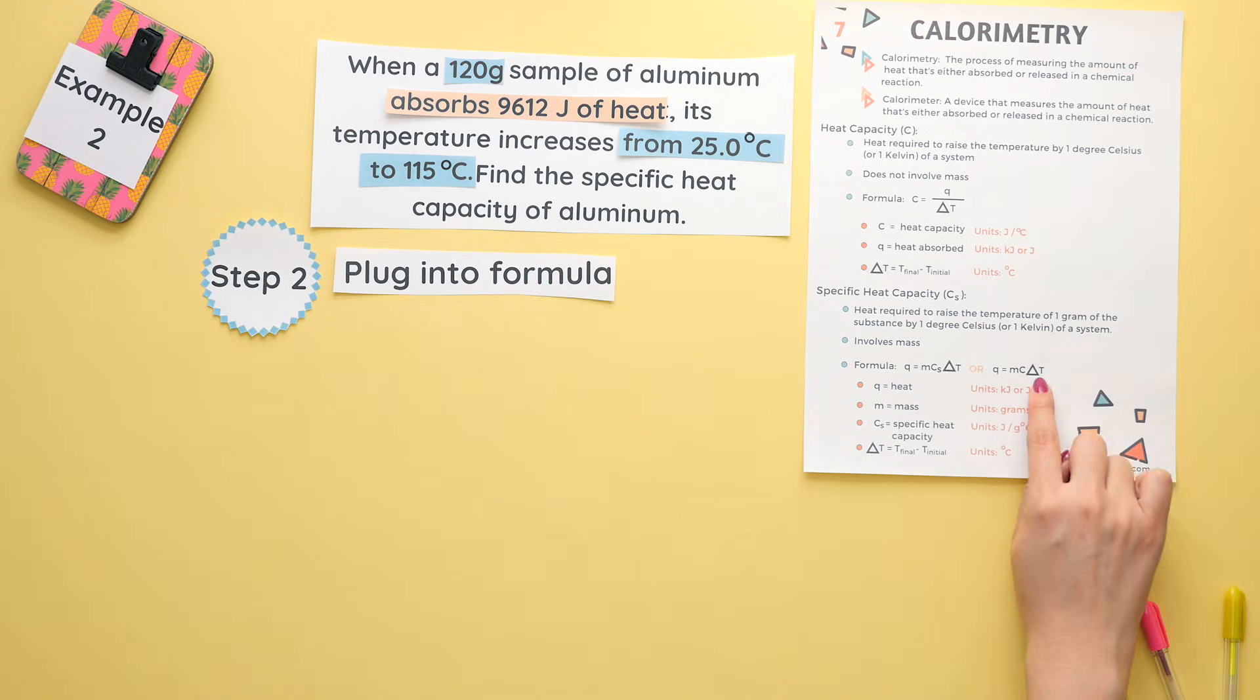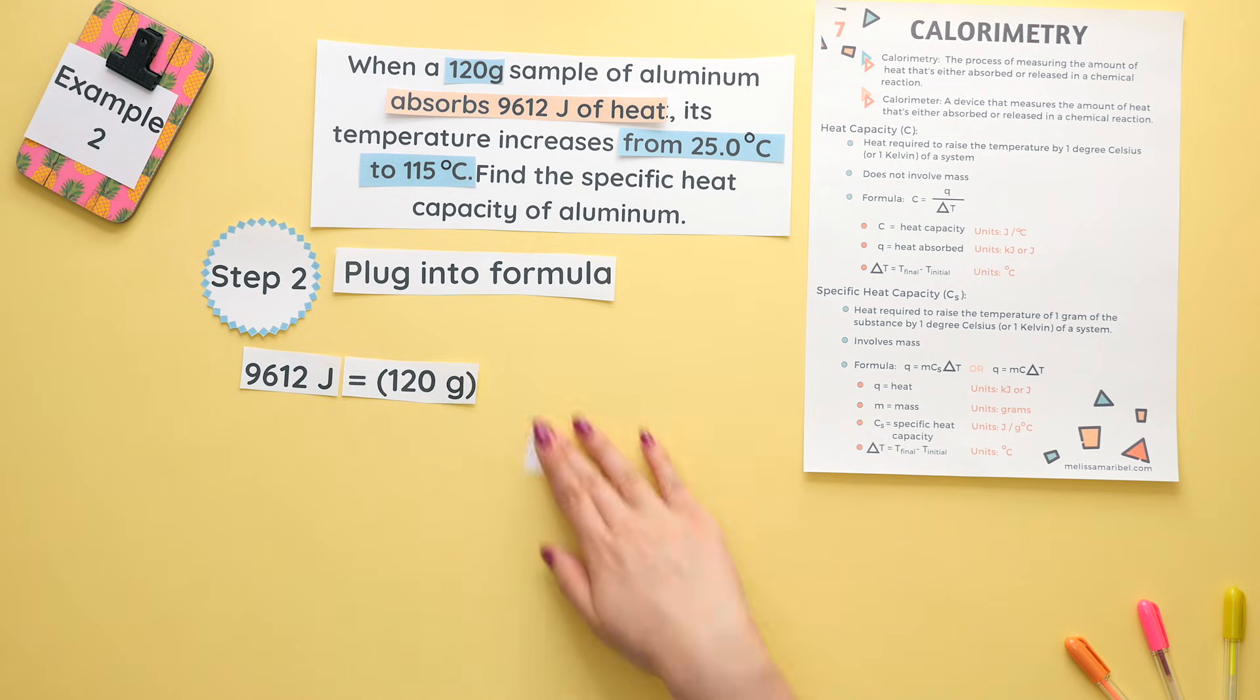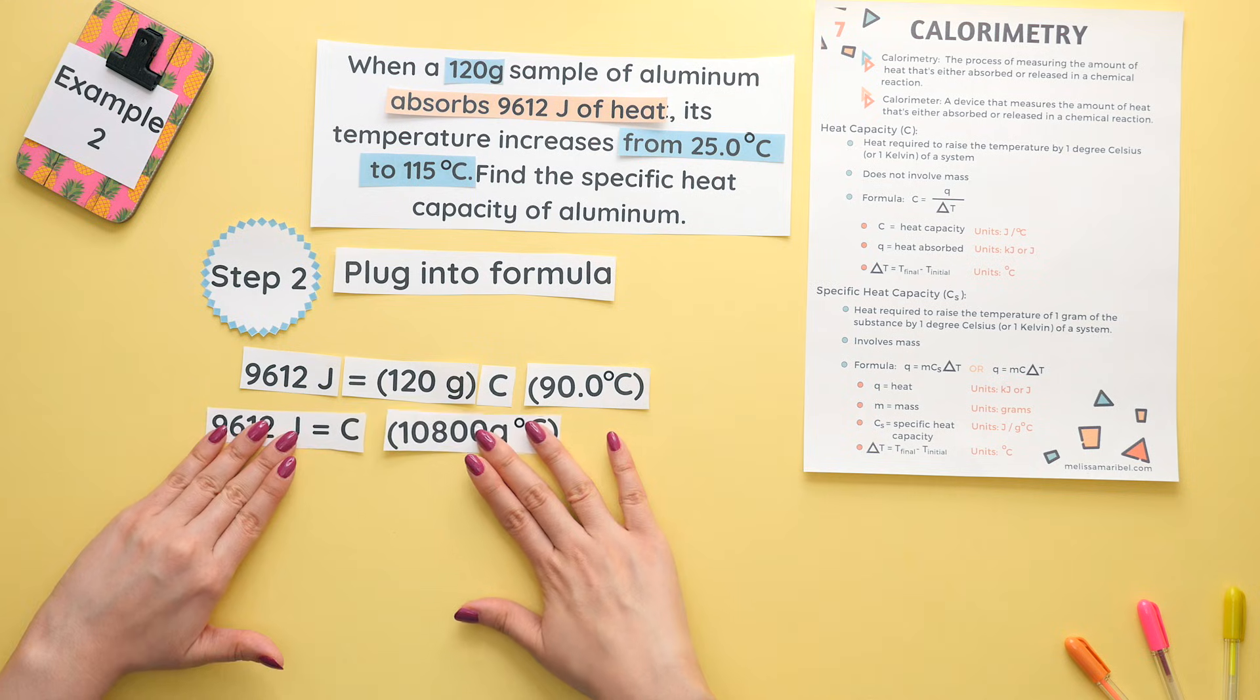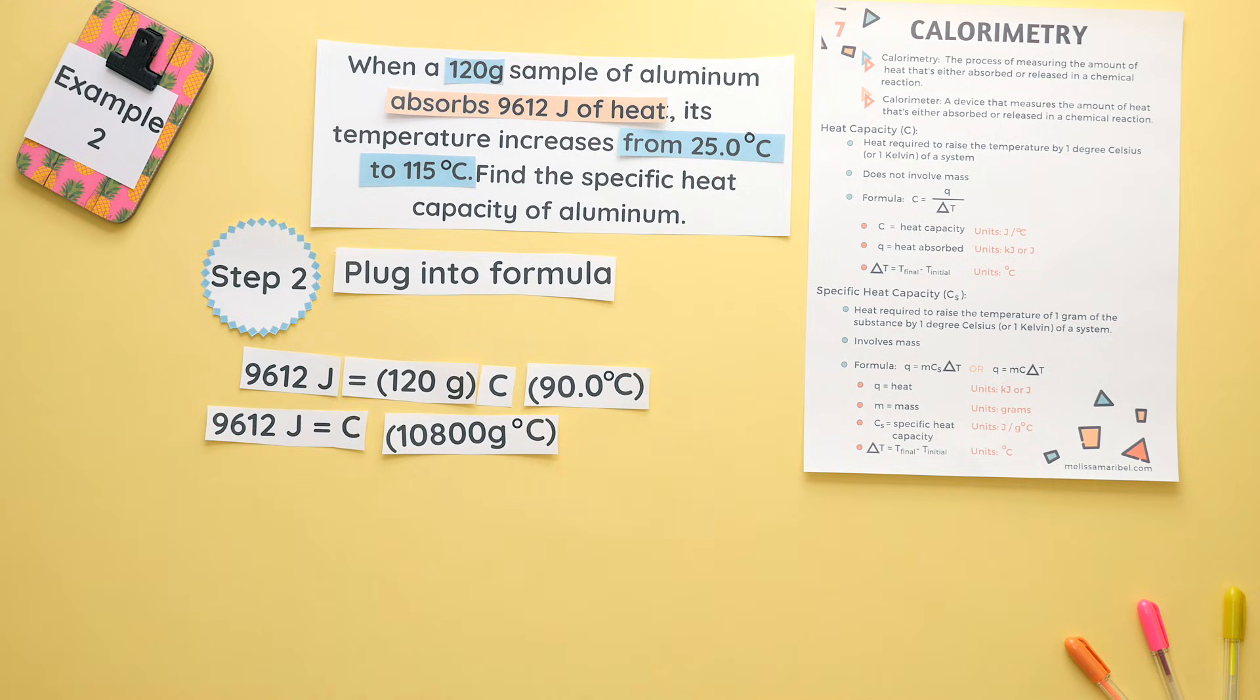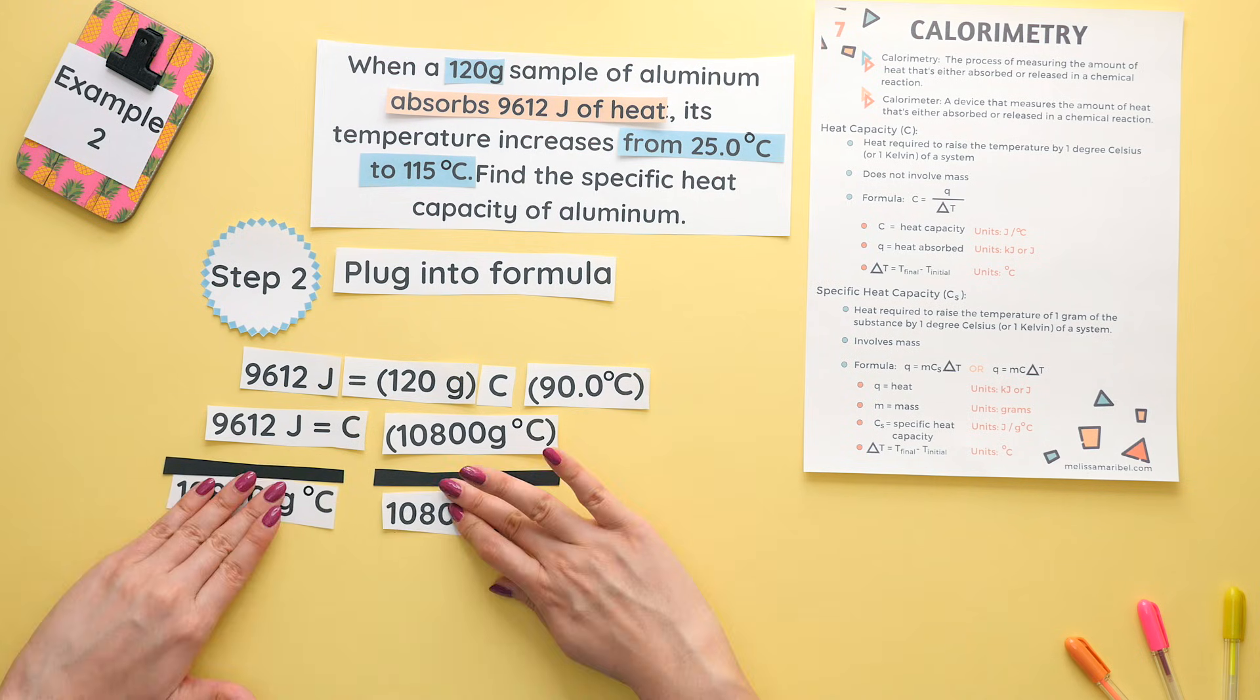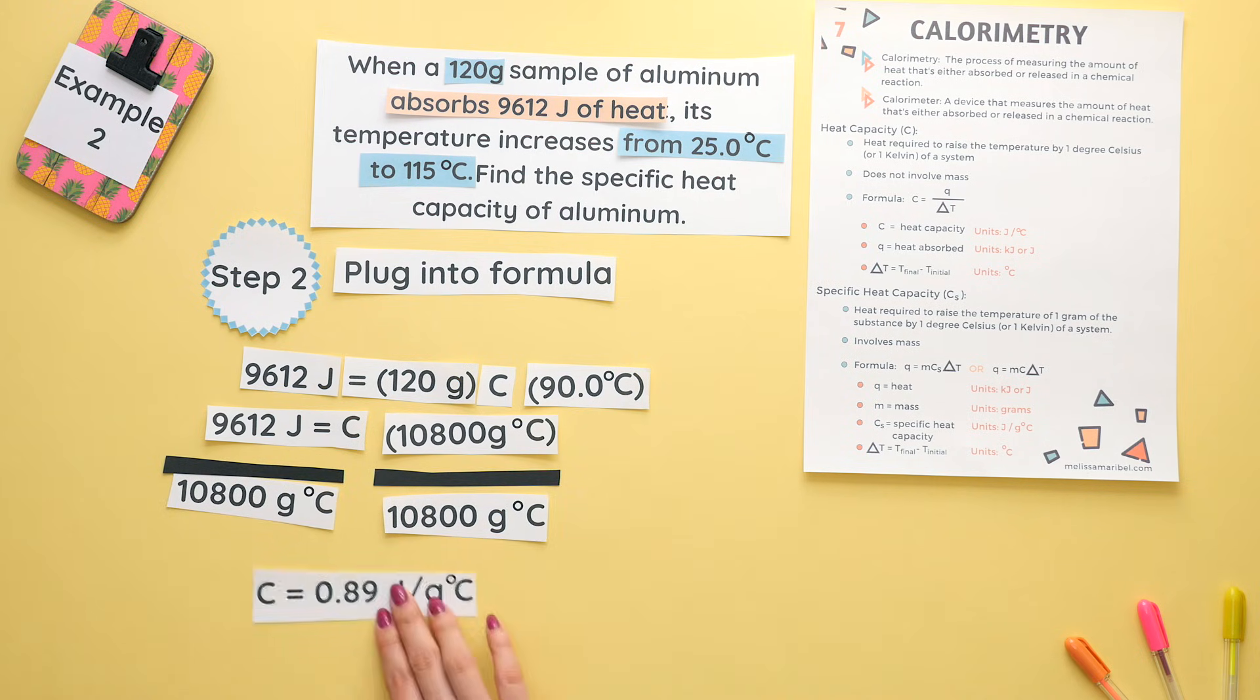Step 2: Plug everything into the formula. So we know our heat, our mass, and we are looking for the specific heat capacity. And we just found our change in temperature. Multiply these two values together so we get this new value with our units of grams Celsius. Now to get the specific heat capacity by itself, we will divide both sides by this value. And our specific heat capacity is 0.89 joules per gram Celsius.